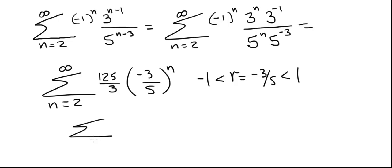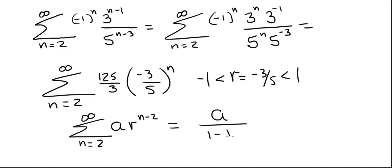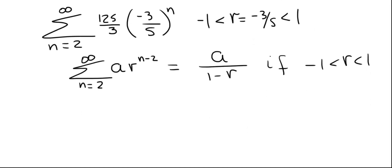Now we have to determine what it converges to. A geometric series that starts at 2 has the following standard form — the form where we can use the convergence formula — it must look like: sum of a · r^(n-2), which equals a / (1 - r), provided that |r| < 1. In our case r is between -1 and 1, but the series doesn't quite look like the standard form yet, so we need to rewrite it.